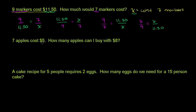Let's do this next one. Seven apples cost $5.00. How many apples can I buy with $8.00? So we're going to let x equal how many apples we can buy. Seven apples cost $5.00, so we have the ratio between the number of apples, seven, and the cost of the apples, five, is going to be equal to the ratio between another number of apples, which is x, and the cost of that other number of apples, which is $8.00.